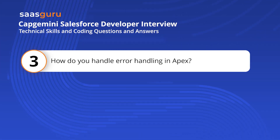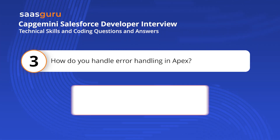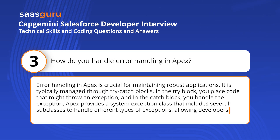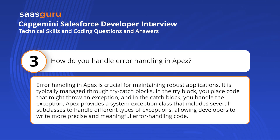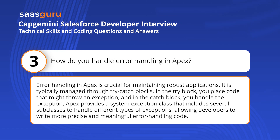How do you handle error handling in Apex? Error handling in Apex is crucial for maintaining robust applications. It is typically managed through try-catch blocks. In the try block, you place code that might throw an exception, and in the catch block, you handle the exception. Apex provides a system exception class that includes several subclasses to handle different types of exceptions, allowing developers to write more precise and meaningful error handling code.